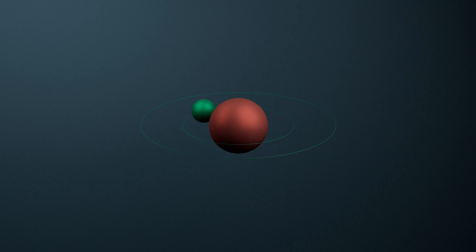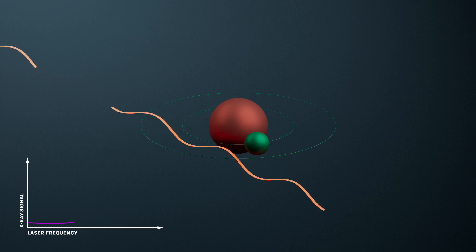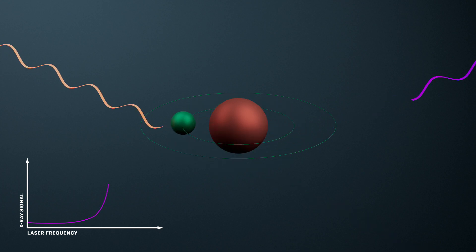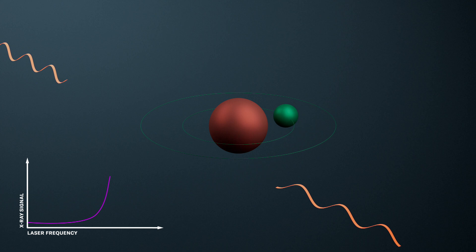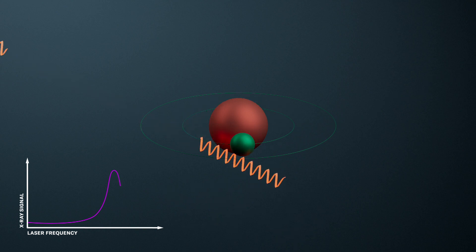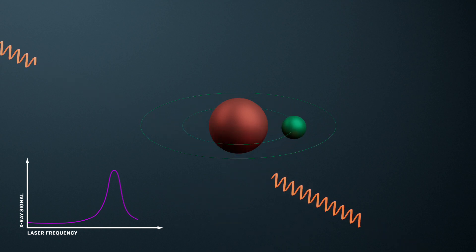In the actual experiment, we keep varying the wavelength of the laser until it is just right. Initially, no X-rays are recorded, but suddenly the signal increases. The intensity of the X-rays reaches a maximum. We have found the frequency we were looking for — the so-called resonant frequency.